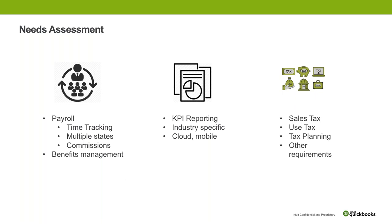KPI is key performance indicator reporting — those are key metrics that you might want to look at for a particular type of client. For nonprofits, they want to know what fundraising they're doing — profit per fundraising event, fundraising per student or staff member. For for-profits there might be sales goals and budgets, different types of performance indicators — room revenue for hotels, or number of turns in their inventory. There's different types of information that you might be tracking.